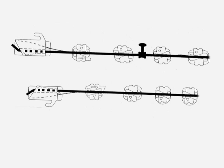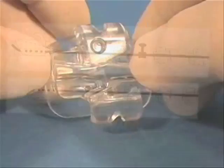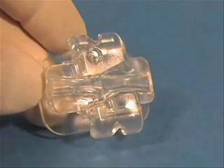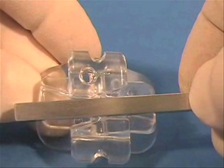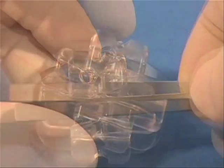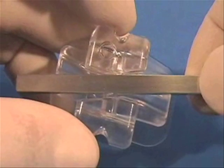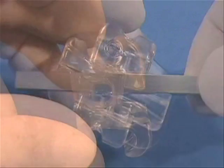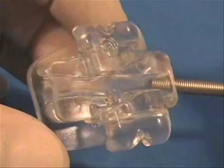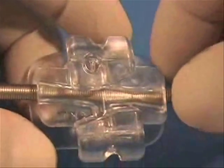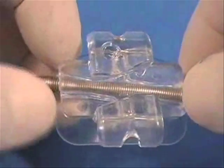Within six to nine months, the nickel titanium wires have uprighted and torqued all teeth against the passive, full-size steel arch wires. This 10 times size model Tip Edge Plus bracket demonstrates how easily a 0.0215 inch by 0.028 inch stainless steel rectangular arch can be accommodated, and how the vertical arch wire space increases as the tooth tips. The deep tunnel lies lingual to the arch wire slot, and it is threaded by a 0.014 inch nickel-titanium wire, represented here by a closed coil spring.